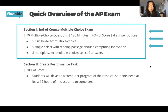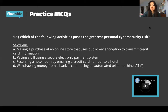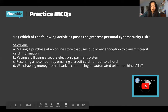Today we're focusing on multiple choice exam questions — two practice questions. These are more intuitive ones; I didn't want to jump straight into complicated algorithm questions yet. The first question is: which of the following activities poses the greatest personal cybersecurity risk? Think about what you know about internet safety. I'll give you 30 seconds.